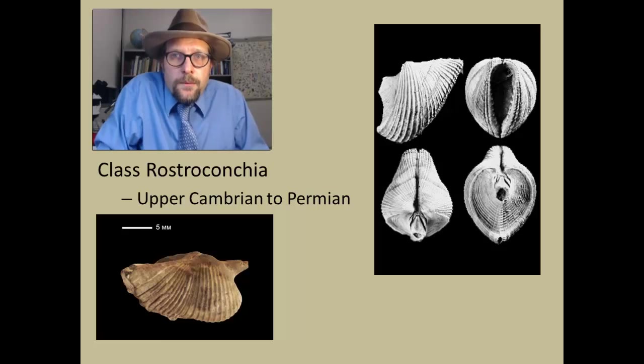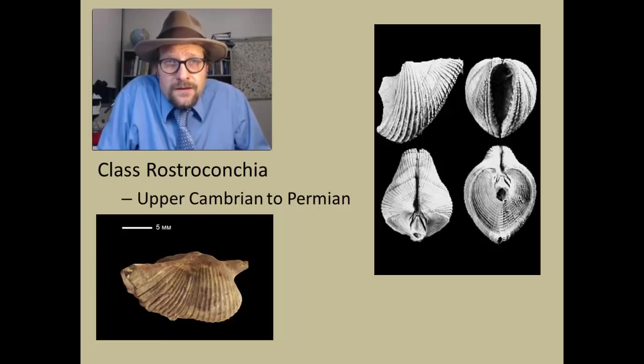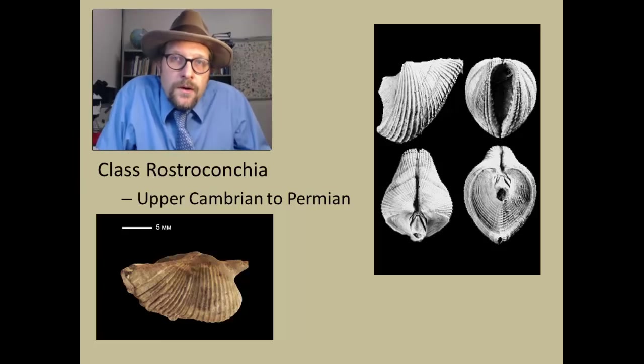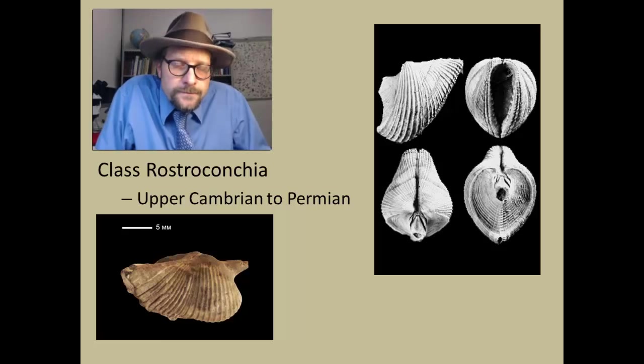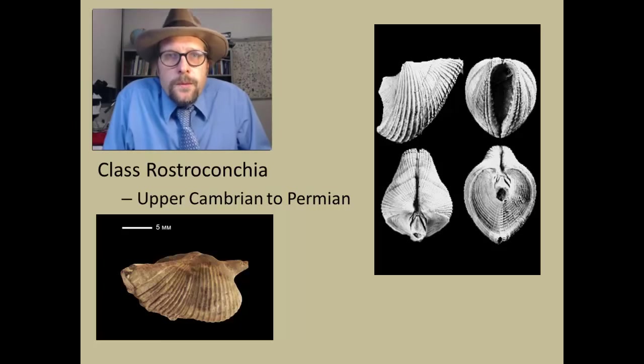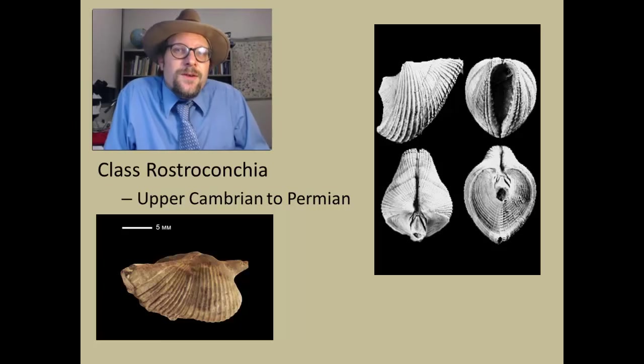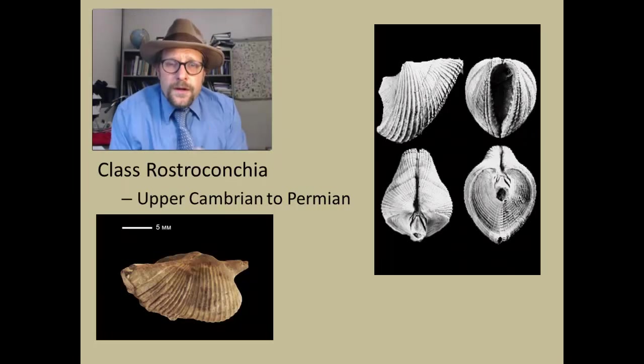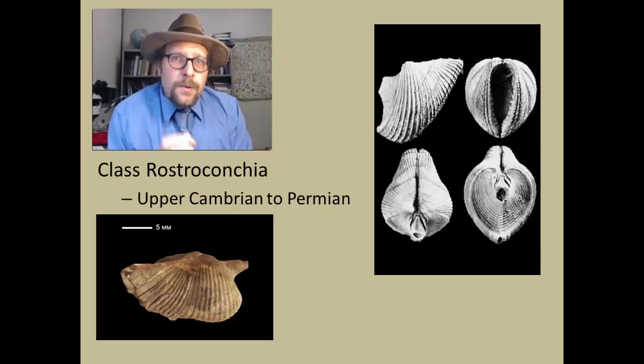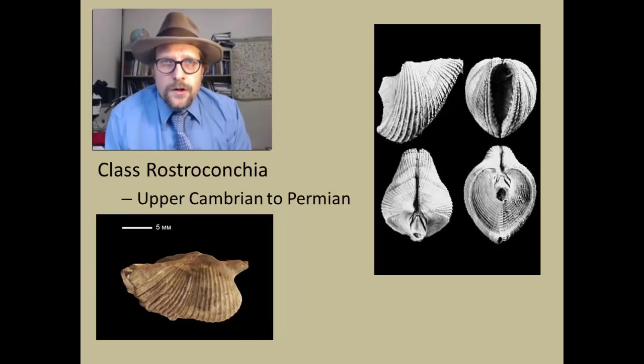They have a shell that has a long pipe that served as the anus exit, and in some ways resemble the tusk shells, the Scaphopoda, which they may have given rise to. They fed on the ocean floor, with most forms buried in the sediment. They diversified during the Ordovician but hung on in the fossil record during the late Paleozoic, becoming extinct at the Permian-Triassic boundary. Molluscs are great survivors, but even the greatest extinction on earth took out some of these groups.